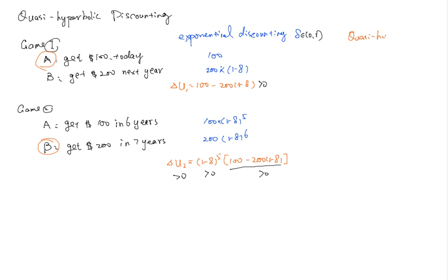Now what does quasi-hyperbolic discounting tell us? Basically we still have the delta. Now we're going to introduce factor beta. So what does that mean? Factor beta discounts all future periods with a constant.